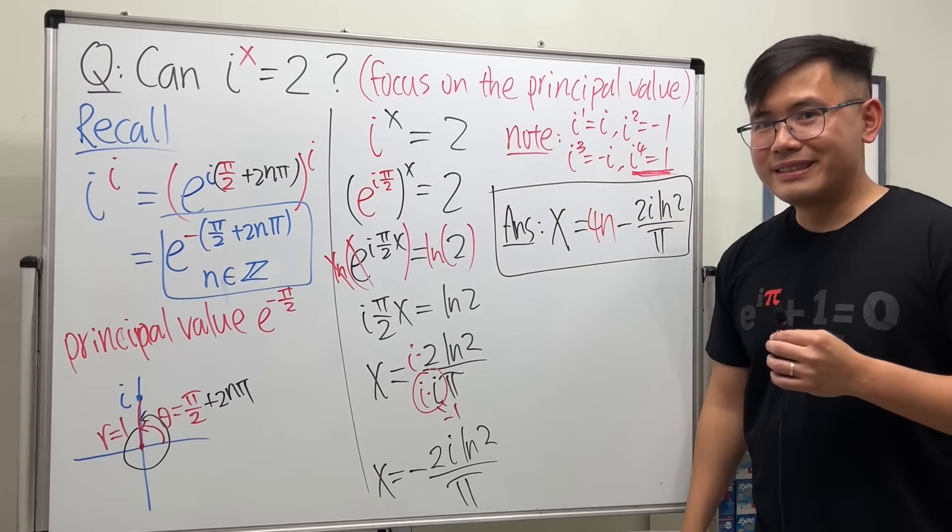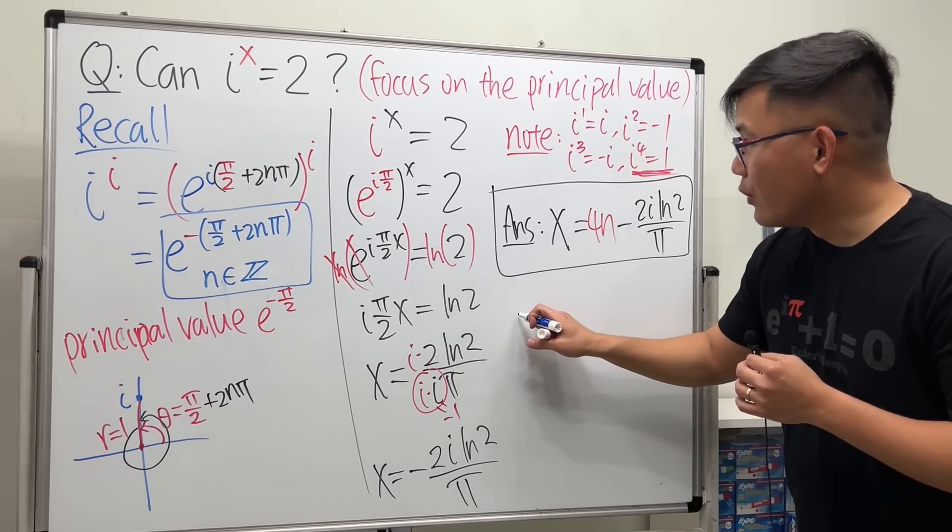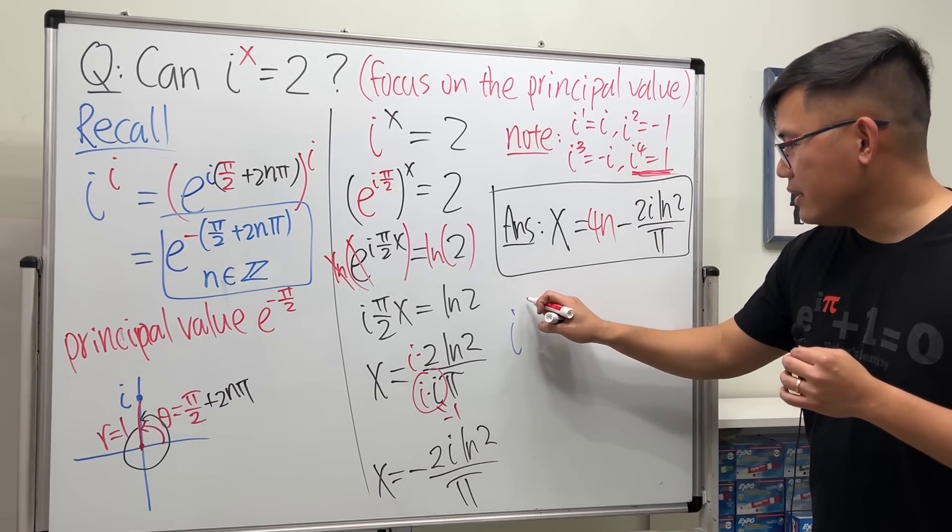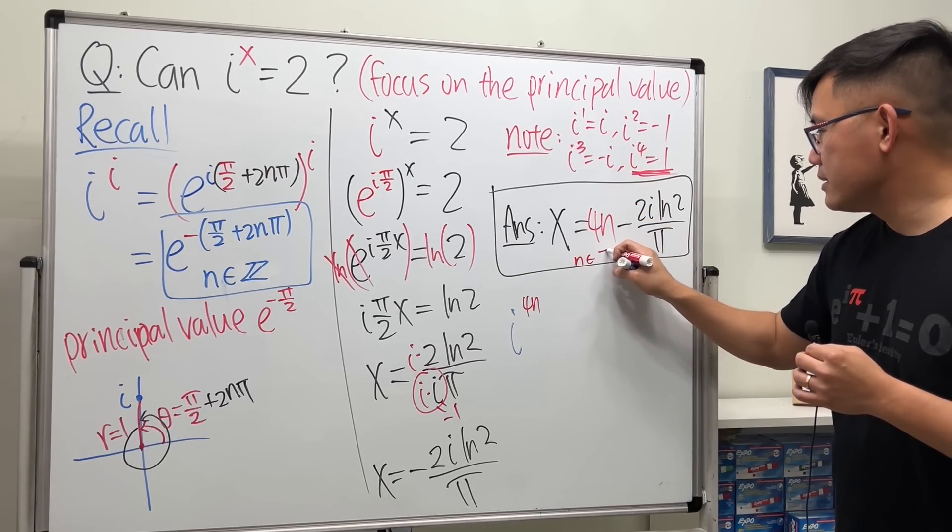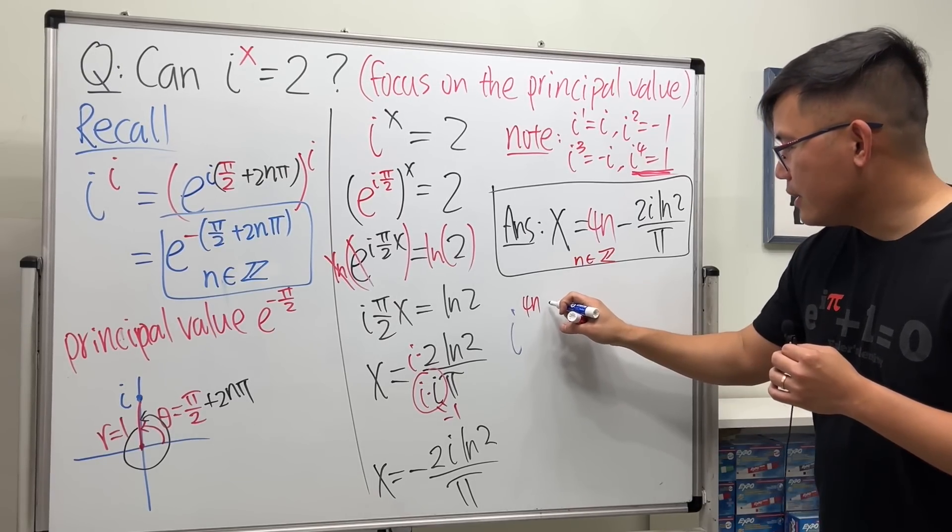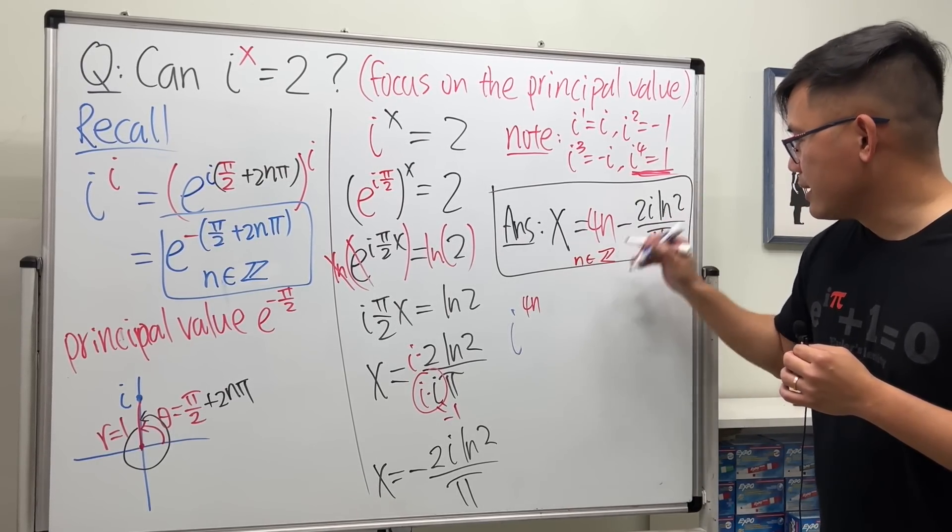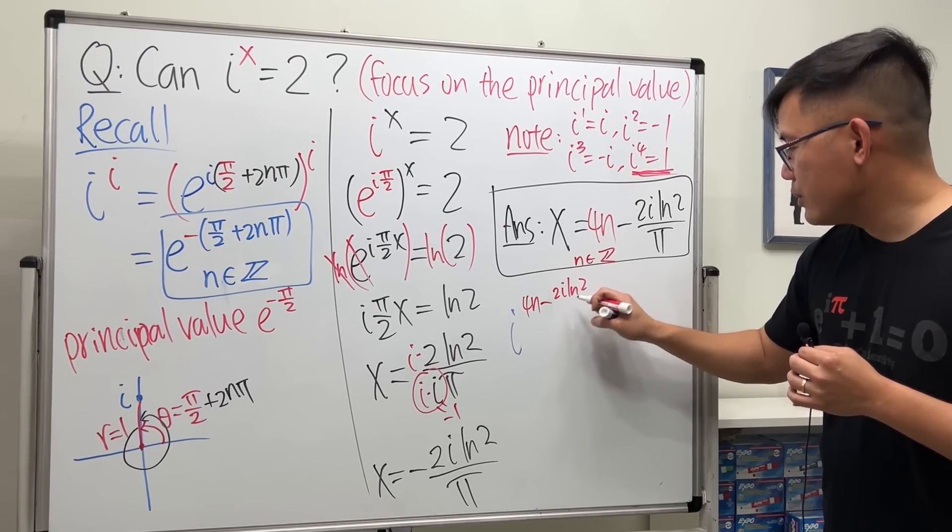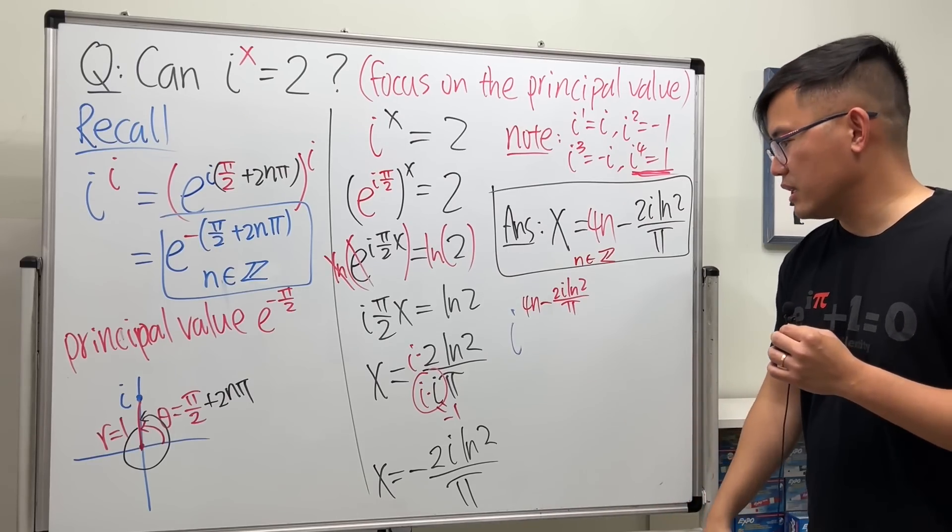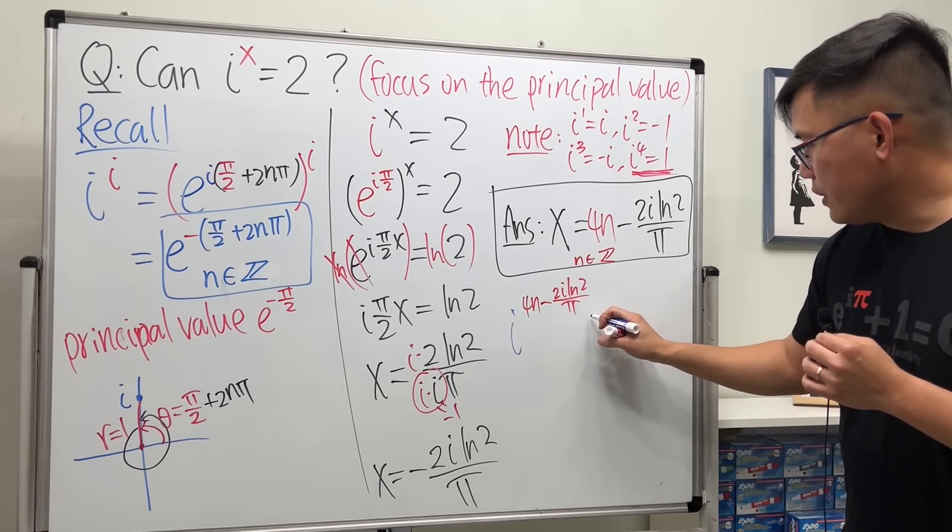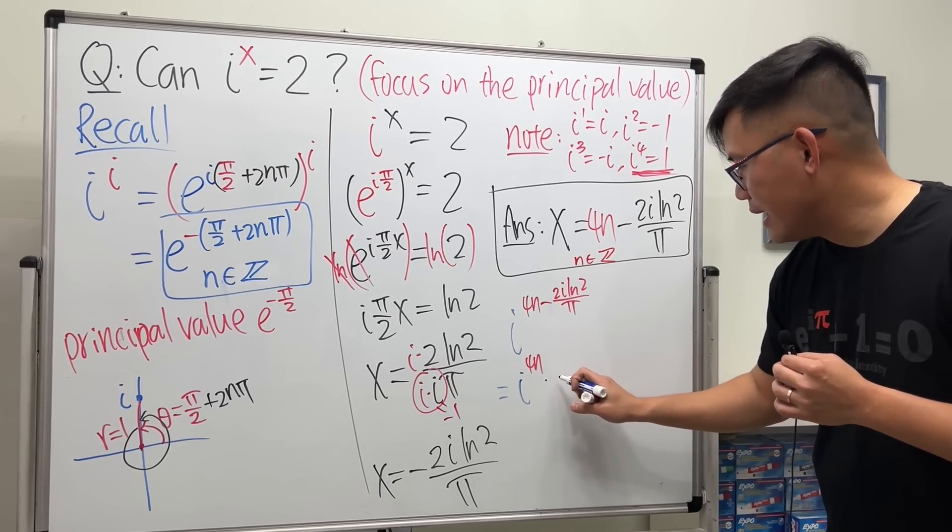This is the answer. Check this out, I will check the answer for you. So we have the base, that's i, and then we have the 4n—so this is a real number, and n is an integer—and then we have the minus 2i ln 2 over π. If we work this out, do we end up with 2? Of course it does.